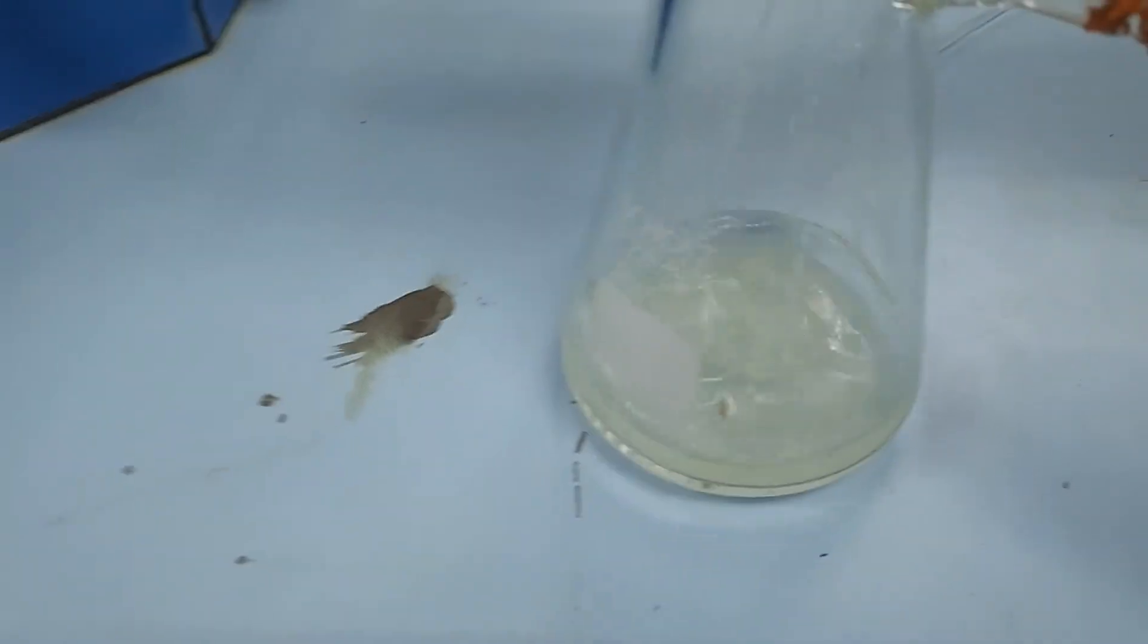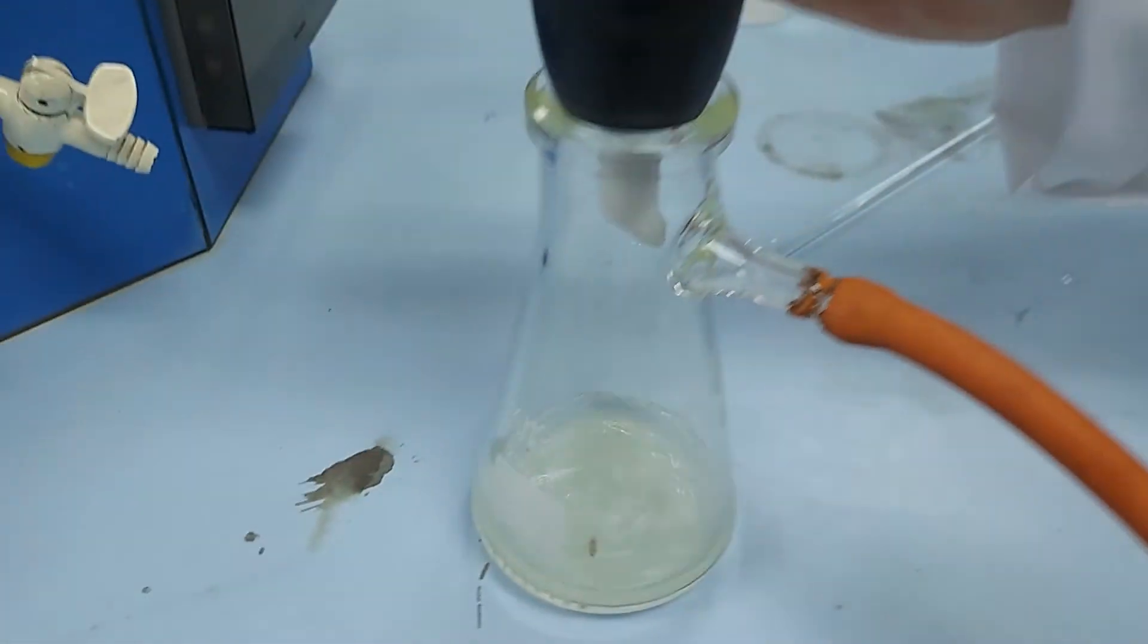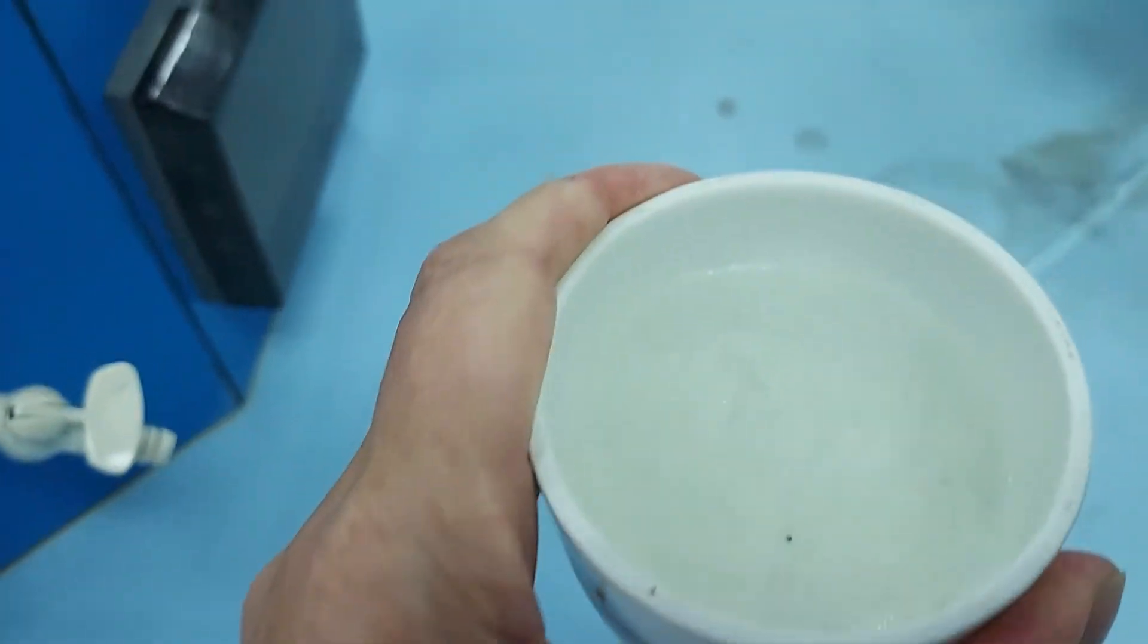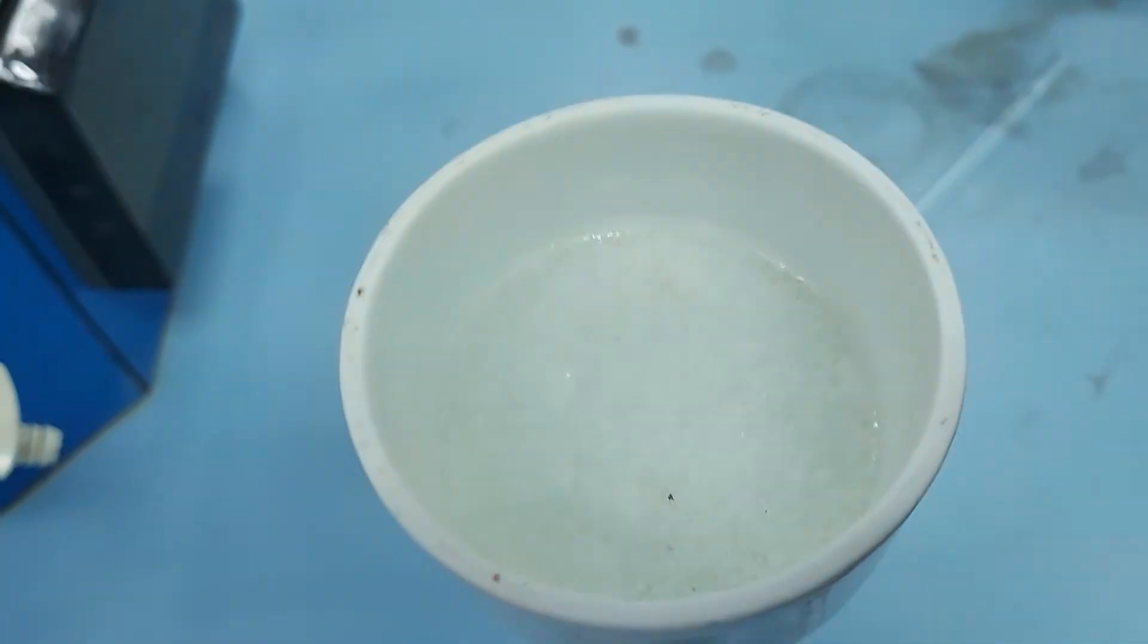So here are the impurities coming through into the Buchner funnel and we should have a pure product formed in here.